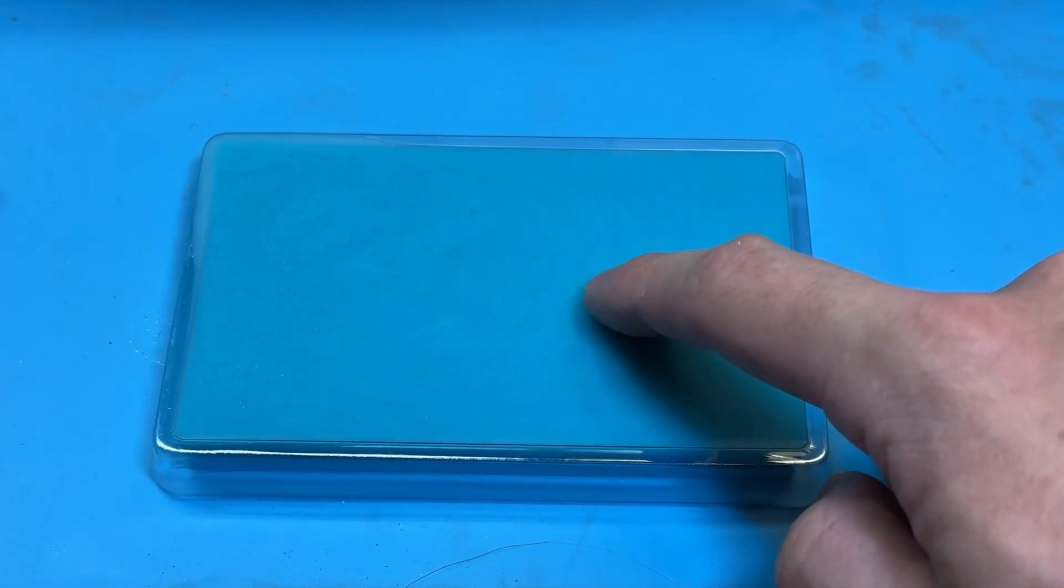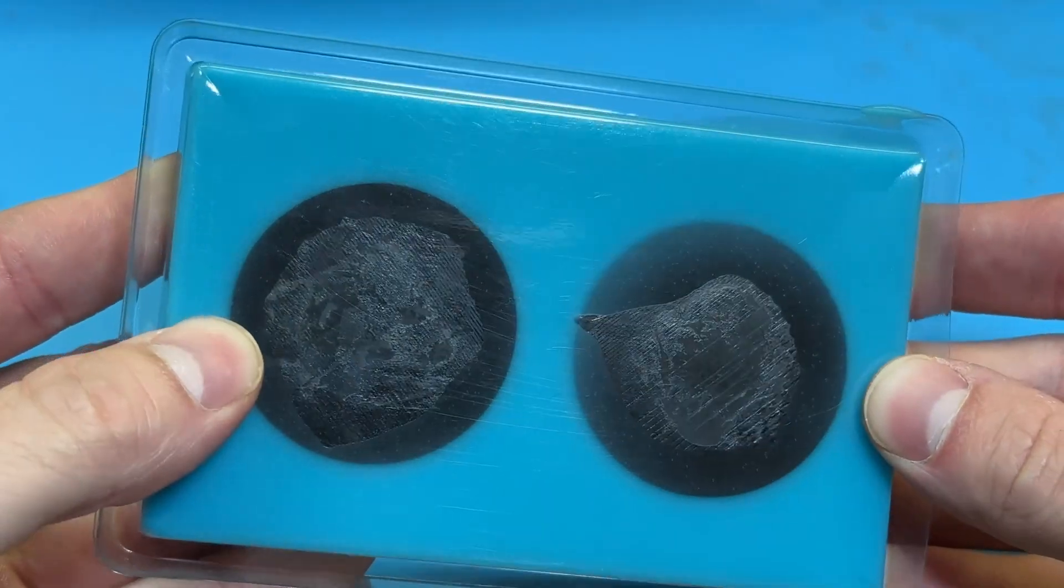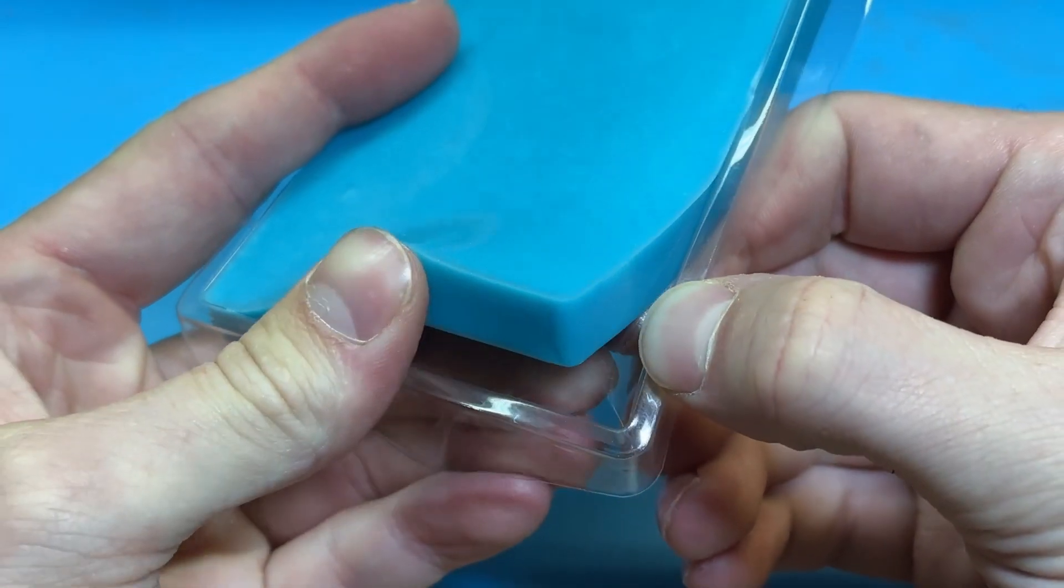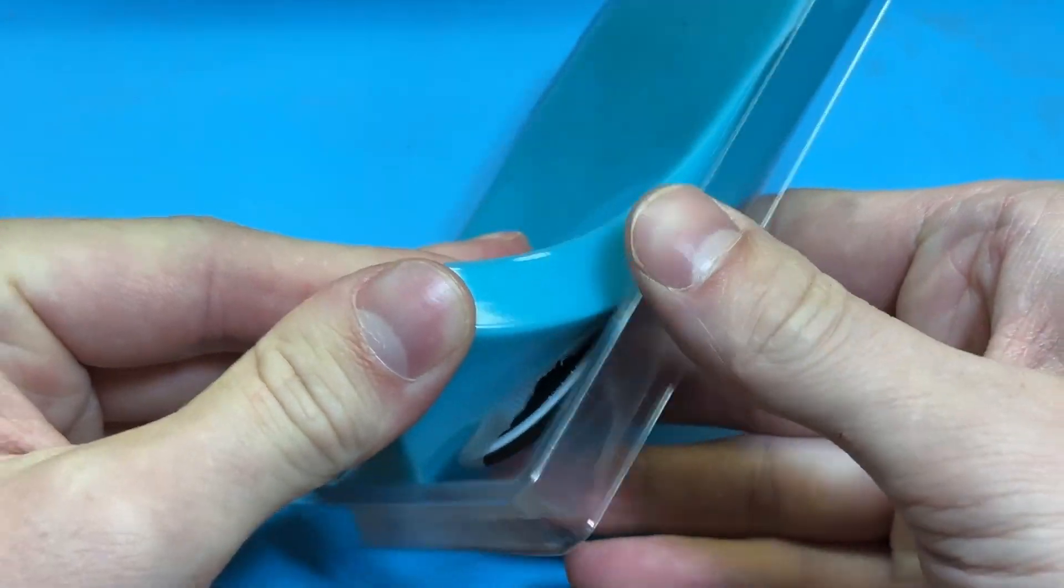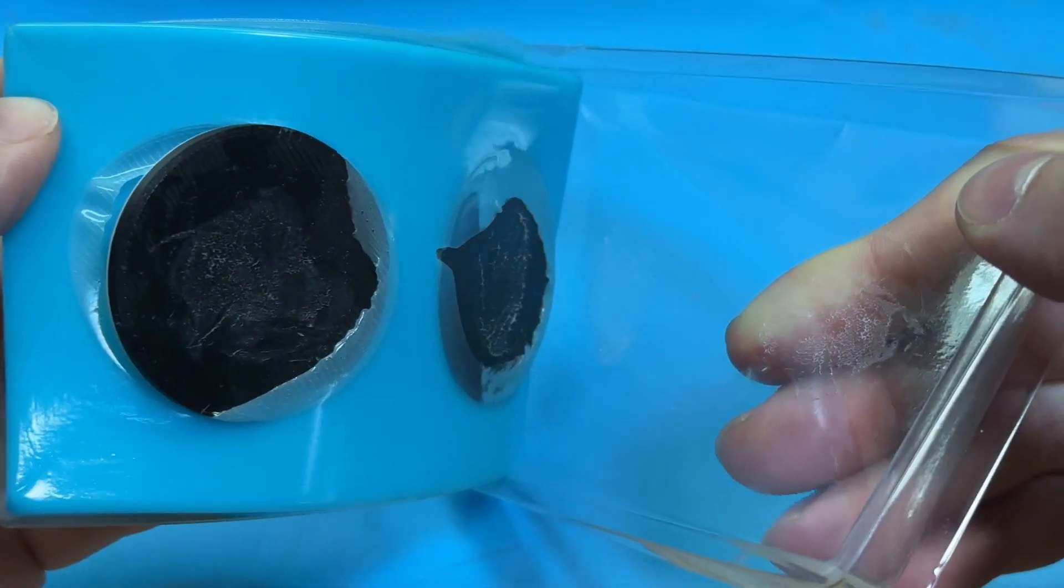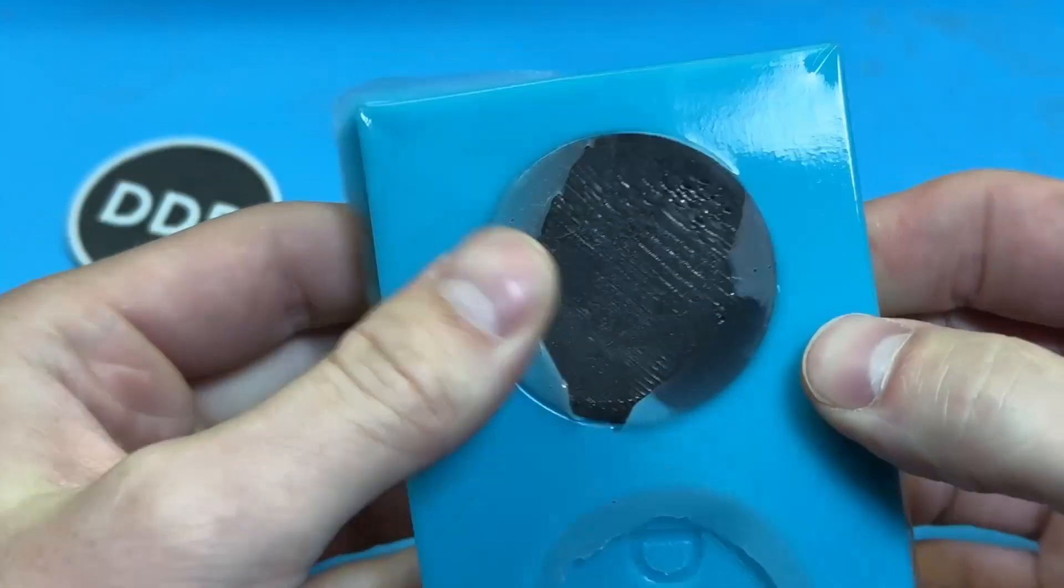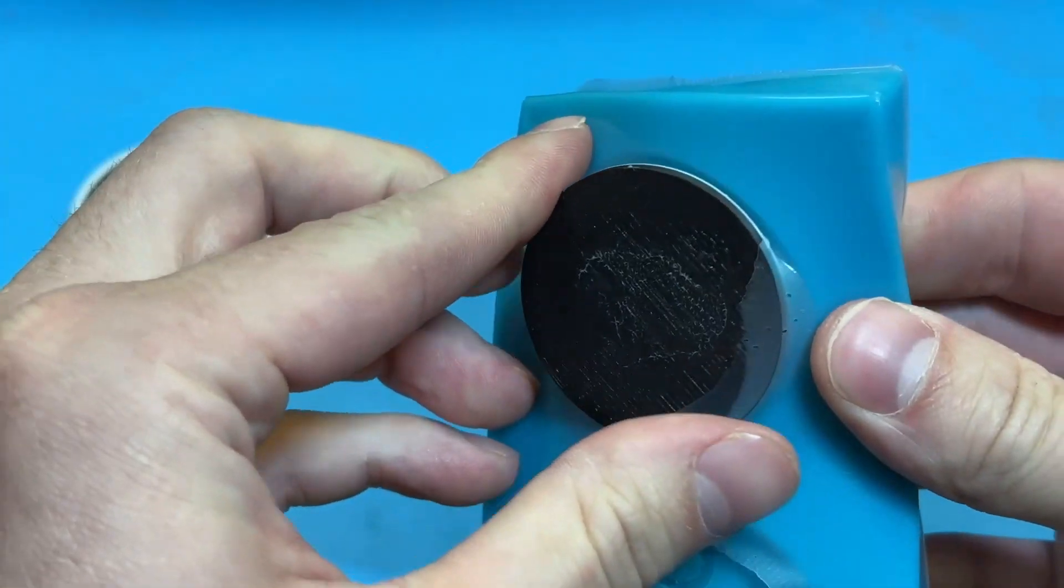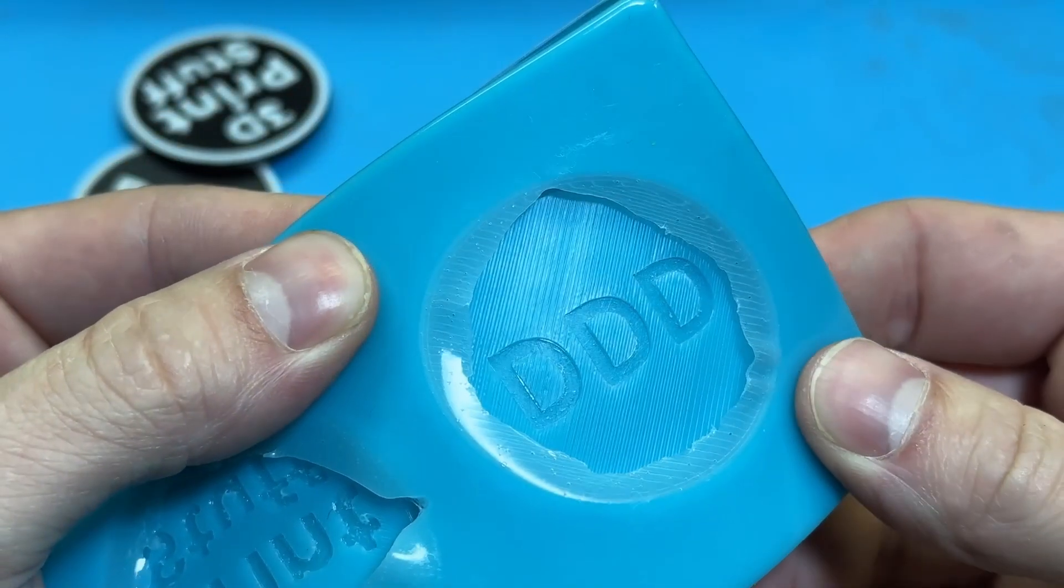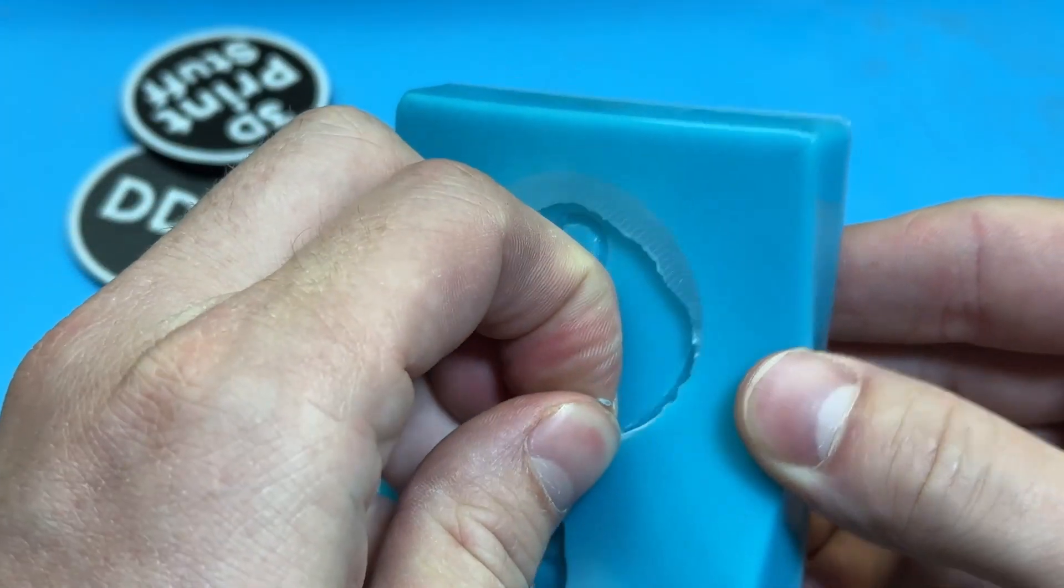I let the silicone cure for 40 minutes before coming back to demold the coins. I've only ever used silicone a couple times to make molds but it's always a super satisfying part of the project. You can see the layer lines in the mold from the 3D print which I think is a pretty cool effect. If that can translate into our cast part I'll be pretty happy with it.